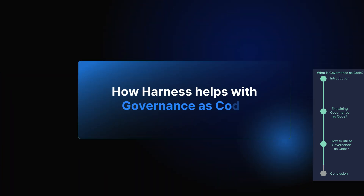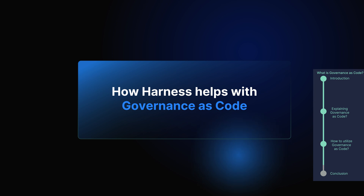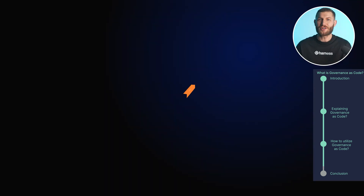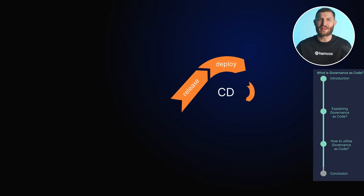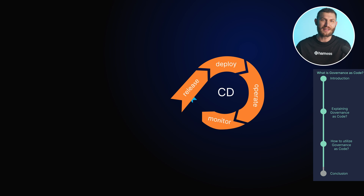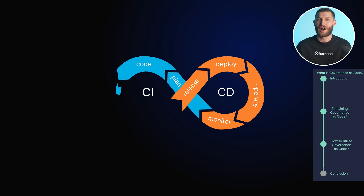How Harness helps with governance as code. Managing governance as code can become overwhelming, especially as your system grows in complexity. That's where Harness comes in. Harness provides an end-to-end solution for integrating governance policies directly into your CI/CD pipeline, automating compliance, security, and operational checks.